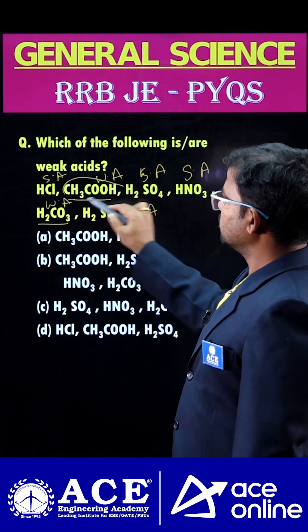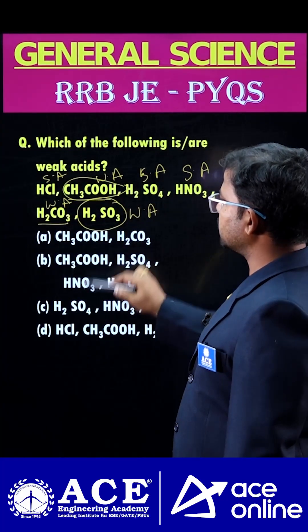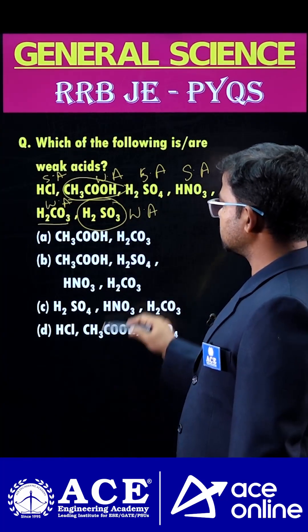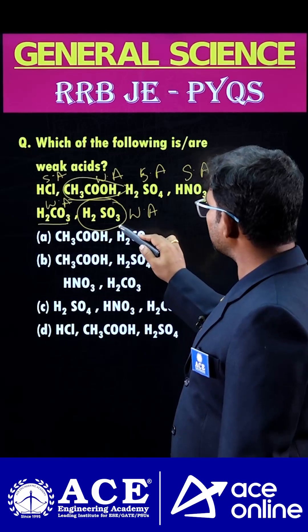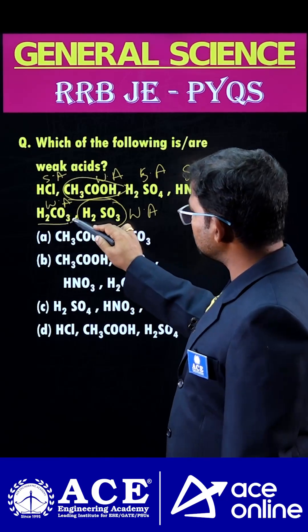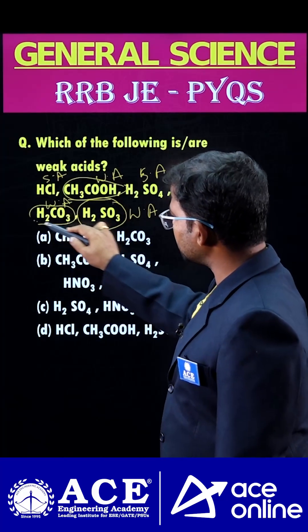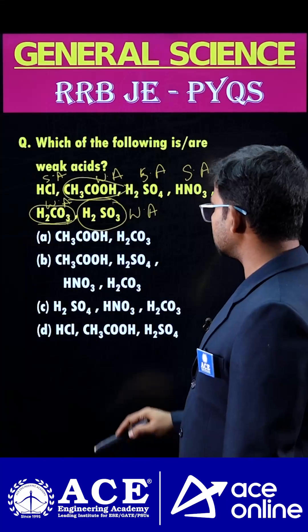So finally, these two chemicals — H2SO3 and acetic acid — are treated as weak acids. This one is also a weak acid — carbonic acid is also a weak acid.